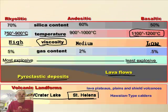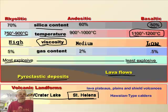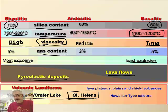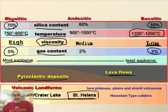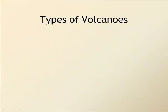Mount St. Helens was actually kind of a medium one. Looking at the chart, the silica content: lava flows that ooze out have about 50% silica, while the ones that explode more have around 70% silica. Another interesting thing is gas content — the oozy ones have about 0.5% gas, while the explosive ones have about 5% gas. Compared to 0.5%, that's quite a bit.